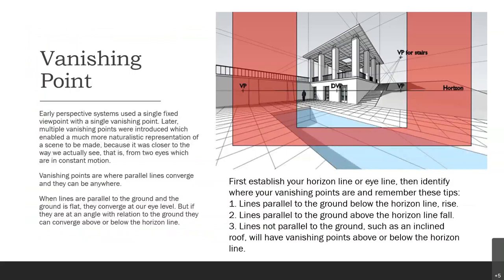Vanishing points — this is where perspective gets interesting. Early perspective systems used a single fixed viewpoint with a single vanishing point. Later, they started developing multiple vanishing points, which enabled a more naturalistic representation of a scene — closer to the way we actually see, since we have two eyes and our eyes move back and forth. Vanishing points are where the parallel lines converge, and they can be anywhere. When lines are parallel to the ground and the ground is flat, they converge at our eye level. But if they are at an angle with relation to the ground, they can converge above or below the horizon line.